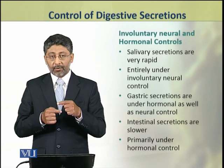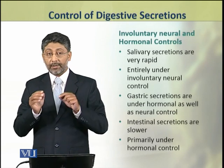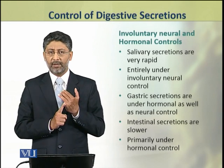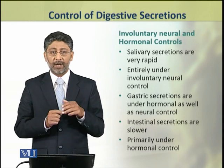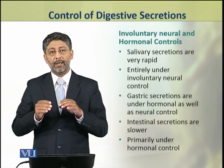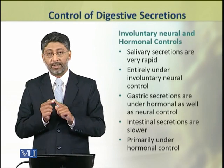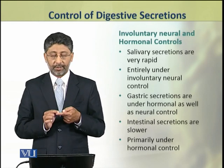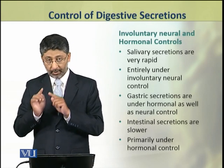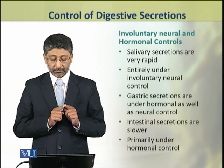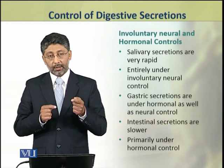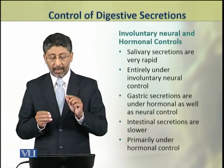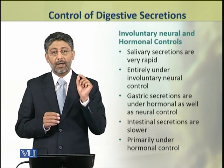These controls control all the secretory activities of glands. For example, salivary secretions are very rapid — they are entirely under involuntary neural control. Gastric secretions are under hormonal as well as neural control. The intestinal secretions are quite slower; they are primarily under hormonal control.